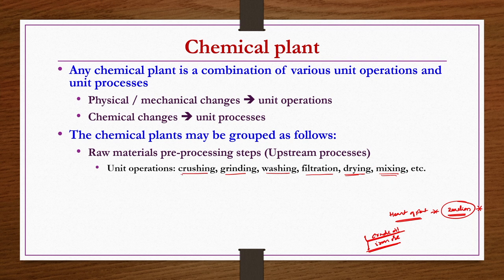All steps of upstream processes are almost like unit operations. There may be a sequence of reactions or sequence of reactors. Anything other than the reaction — other than chemical changes — is regarded as a unit operation. All physical or mechanical changes occurring in the plant are unit operations.